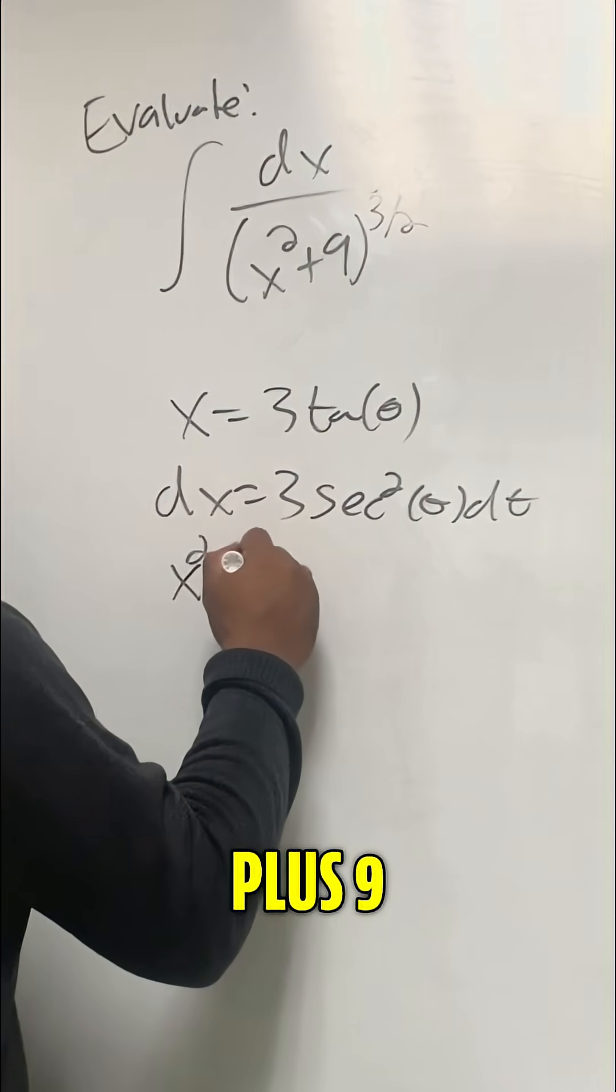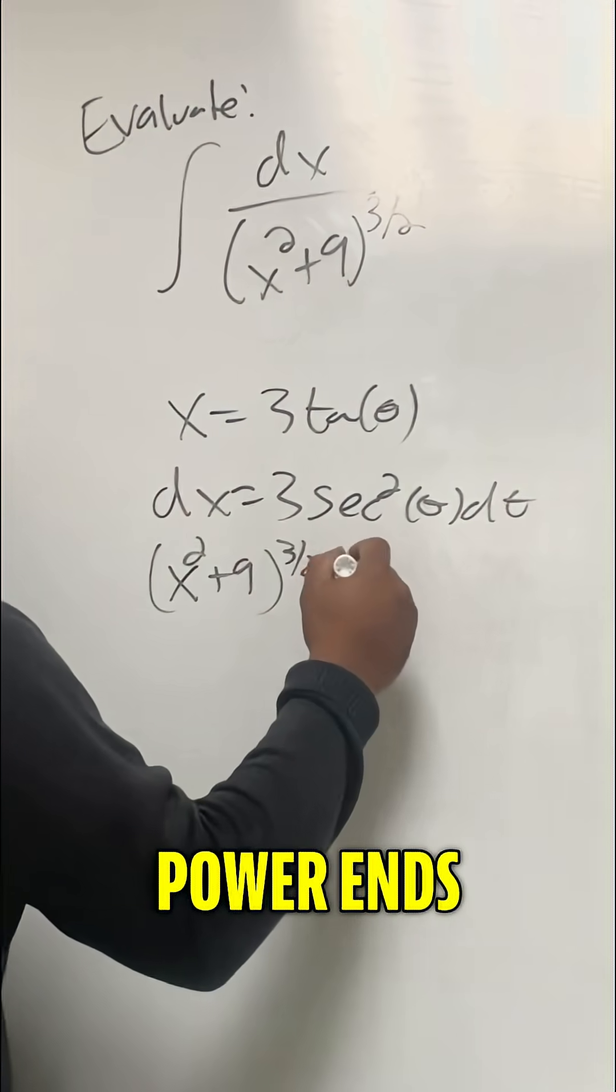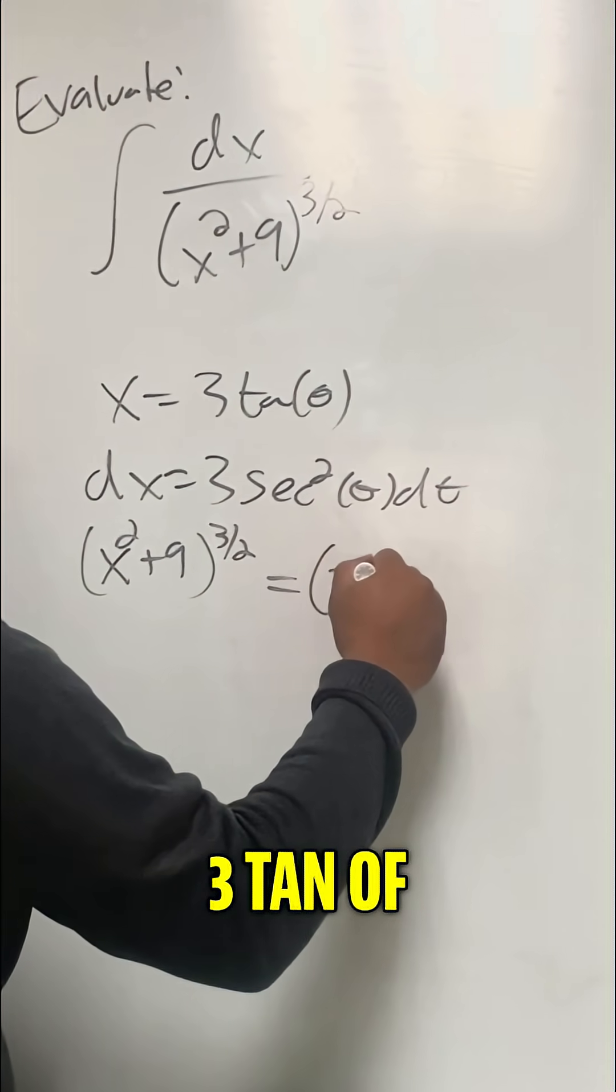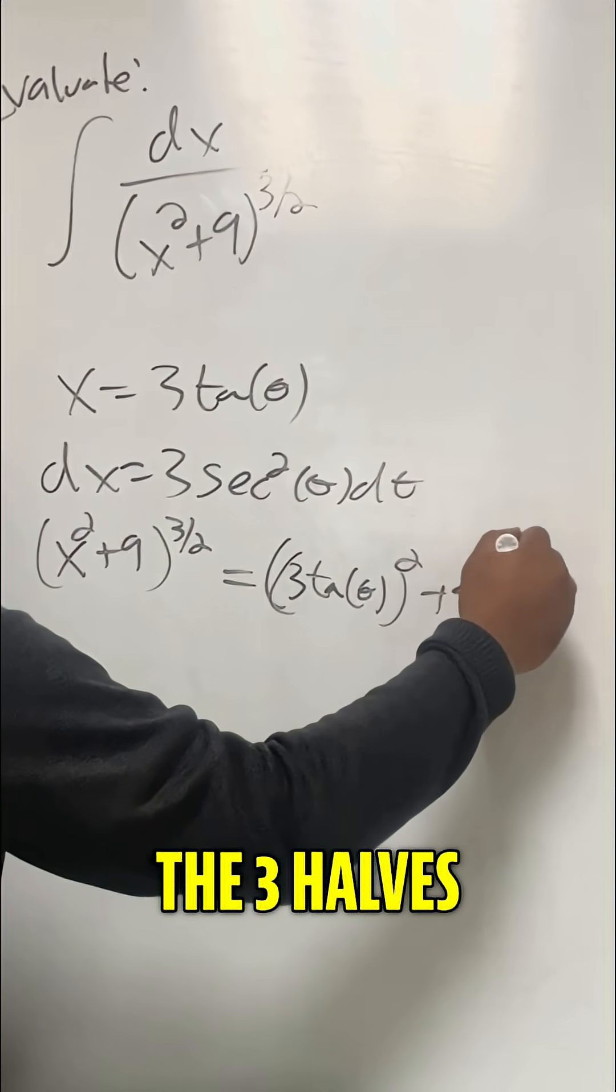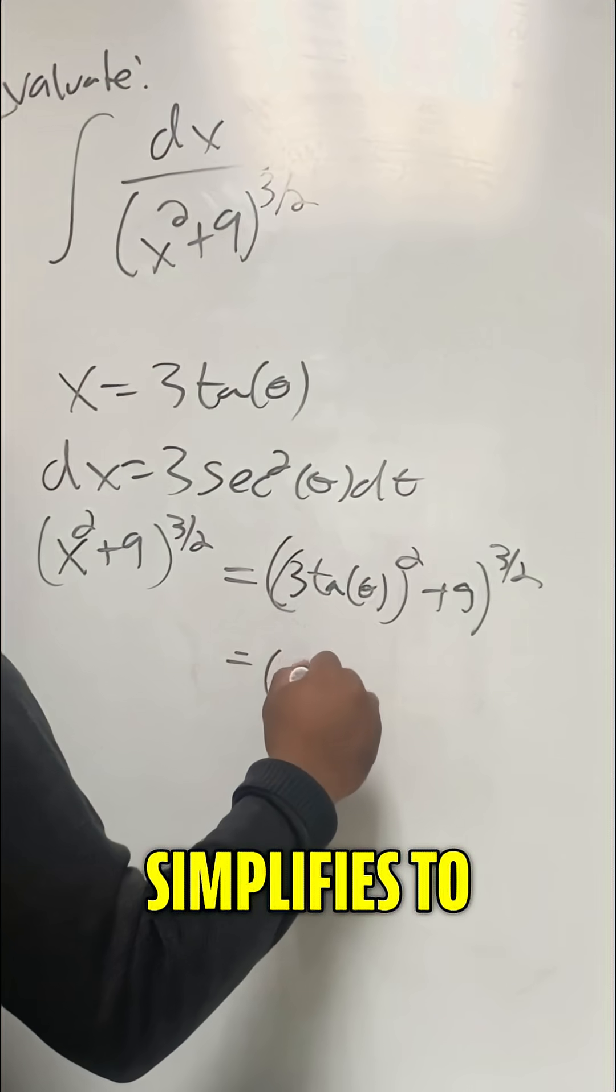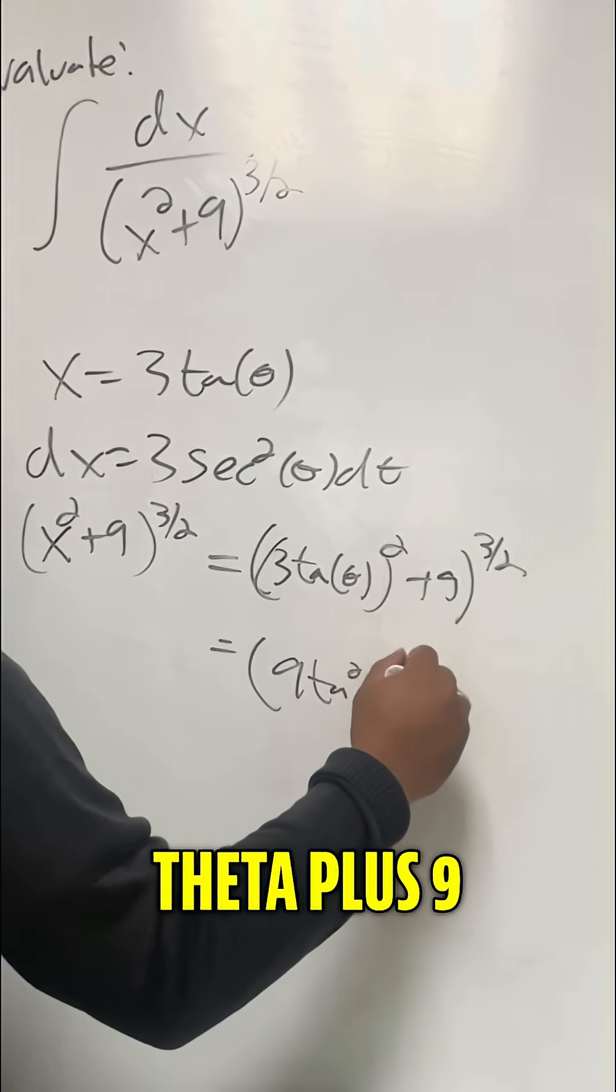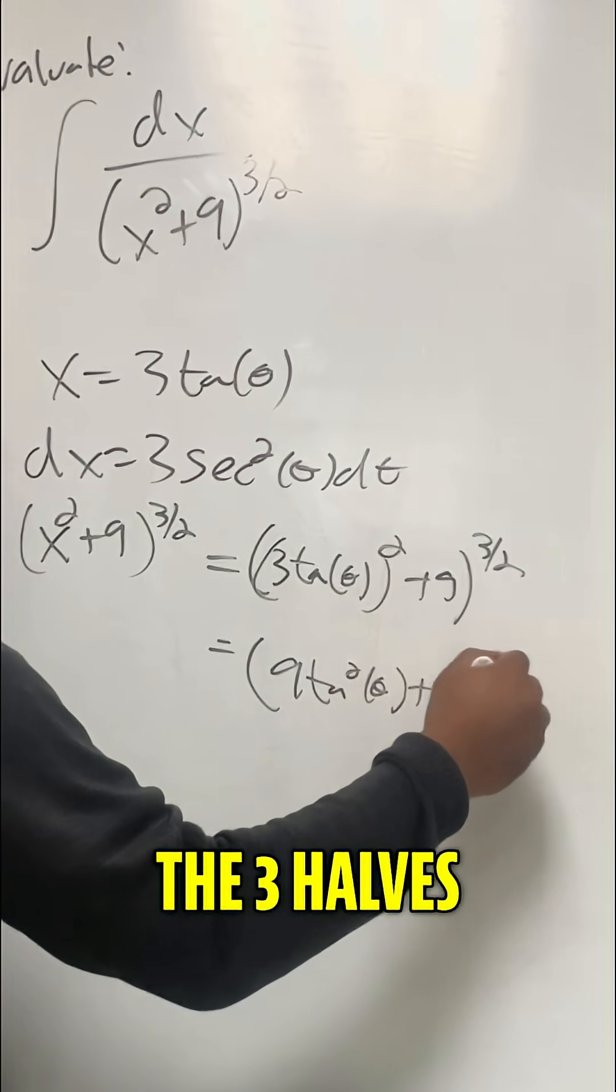And we get that x squared plus 9 to the 3 halves power ends up being 3 tan of theta squared plus 9 to the 3 halves power. But that simplifies to 9 tan squared of theta plus 9 to the 3 halves power.